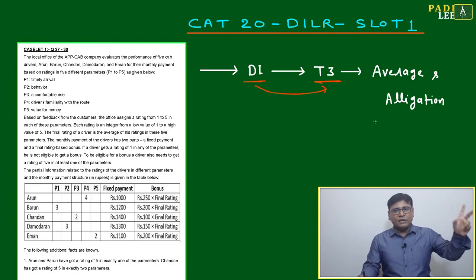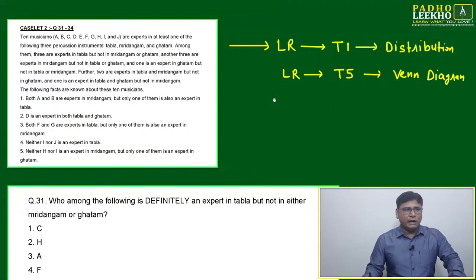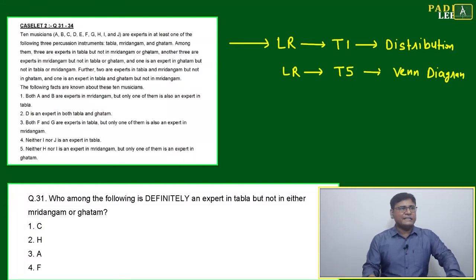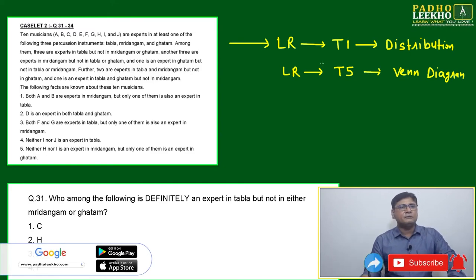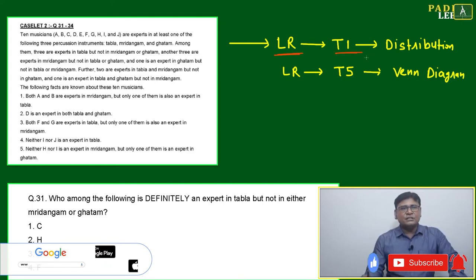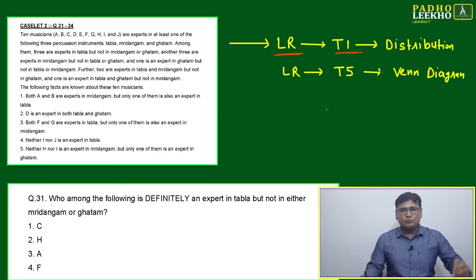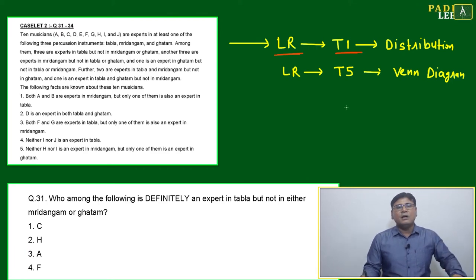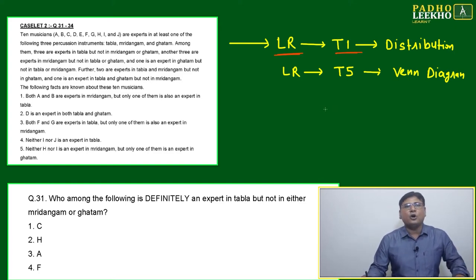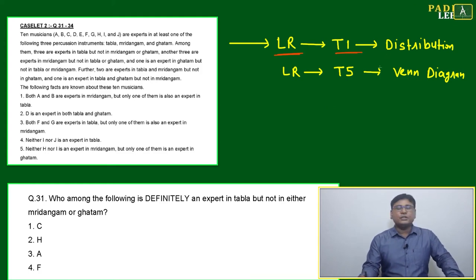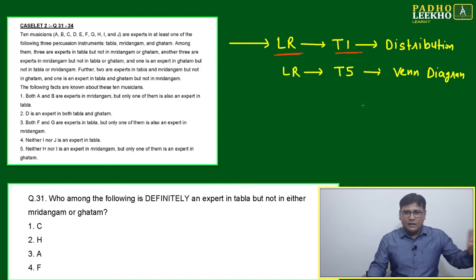If a caselet turns out to be average and allegation, move to the next caselet immediately — it will take barely three to four seconds. The next caselet might say '10 musicians ABCD are expert in this and that' — with many points given — and that is LR. Based on distribution, we categorize: distribution, selection, arrangement, ranking, and sequence. If it is LR Type 1 — distribution-based — we know that distribution-based caselets will be lengthy.